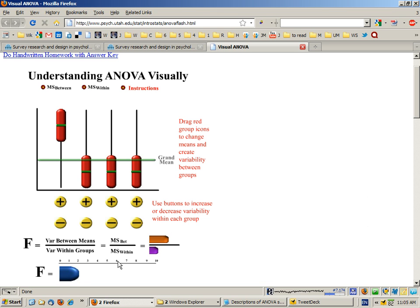If we drag another group further away we're further increasing the between group variance and we're getting up towards an F value of 3. The critical value for F is about 3.8 although that depends on the degrees of freedom. So one thing we can do to increase F is increase the distance between the means of the groups.